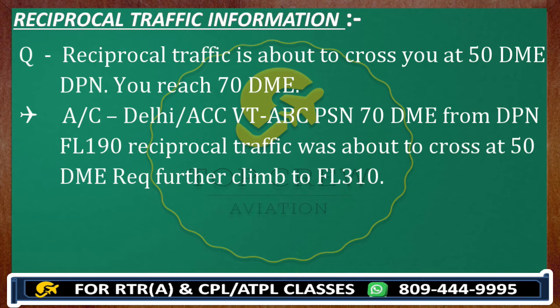Because now you are at 70 DME from Delhi Papa November, and once clear — because you got the information that reciprocal traffic would clear at DME 5-0 — once you have the confirmation or ATC has the confirmation, then you can climb or descend further according to the situation.